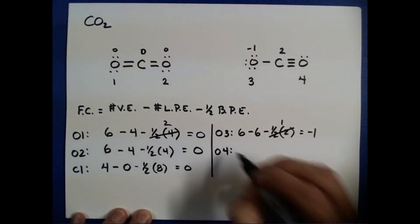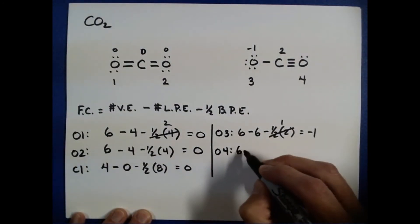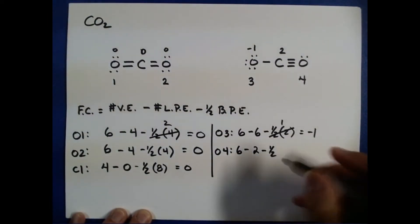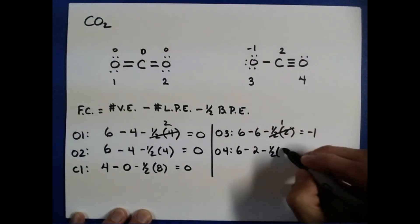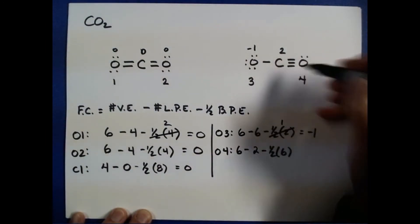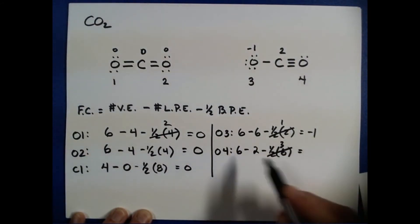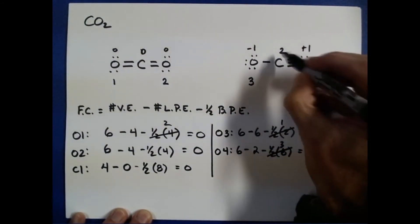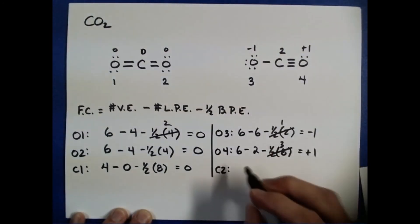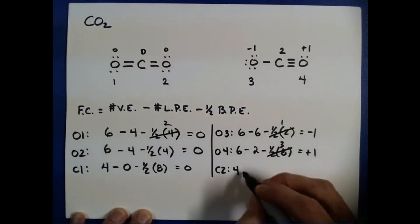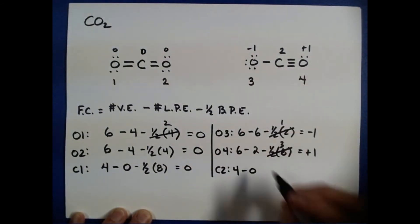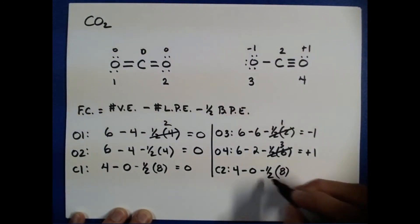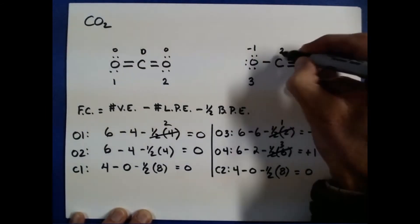Let's do oxygen four. We have six valence electrons again, minus two lone pair electrons, and then minus half of six bond pair electrons. Half of six is three, so six minus two minus three gives a formal charge of plus one. And for carbon two: four valence electrons in carbon, that carbon has no lone pairs, and it has eight bond pair electrons. Half of eight is four, so four minus four equals zero — we'll assign carbon two a formal charge of zero.